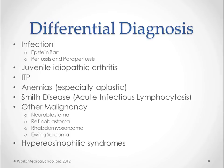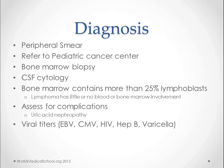Hypereosinophilic syndromes are also on the differential. Diagnosis starts in the primary care clinic where you begin picking up symptoms. You might run blood tests like a complete blood count with differential and a peripheral smear. Once you suspect some kind of cancer, refer them to pediatric cancer centers where they'll get bone marrow biopsies. If CNS involvement is suspected, you do CSF cytology. If the bone marrow contains more than 25% lymphoblasts, we call it lymphoblastic leukemia.